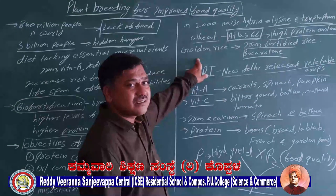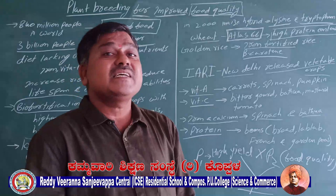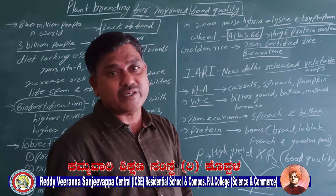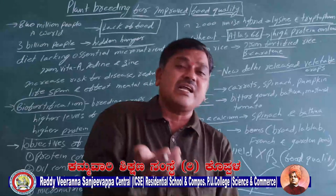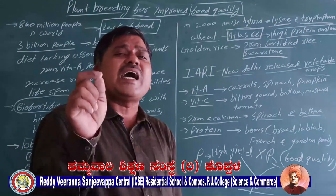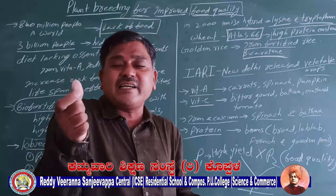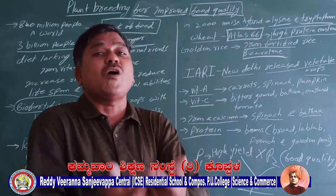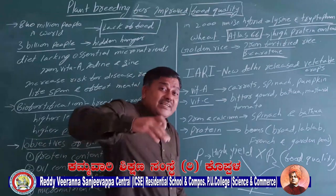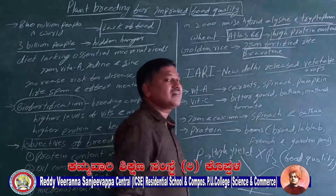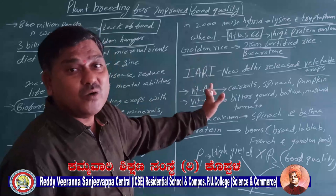Third is golden rice. Gold is not present in it, but there is an increased concentration of iron and beta-carotene. Earlier, rice varieties had less iron content. When we crossed high-iron-containing and high-yielding rice plants, we got a hybrid called golden rice. It is called golden rice because there is a five-times increase in iron content and beta-carotene.